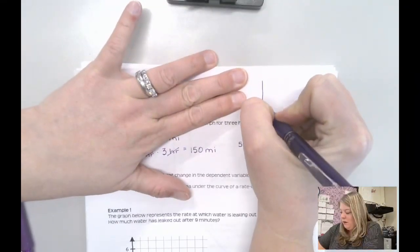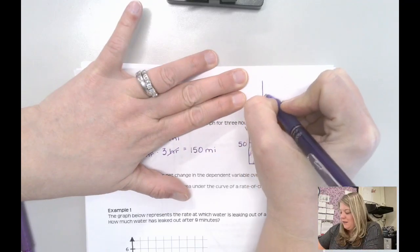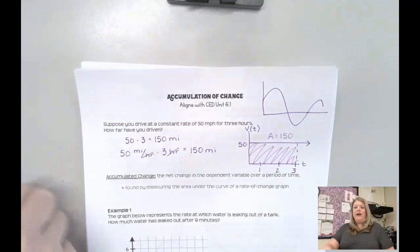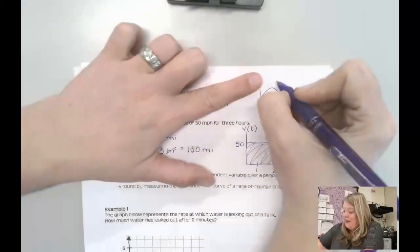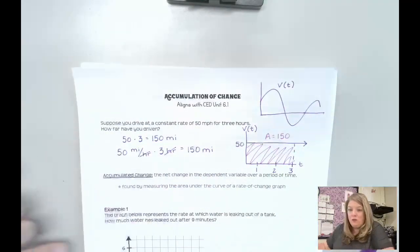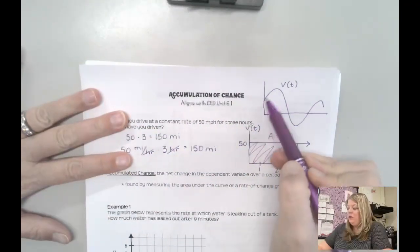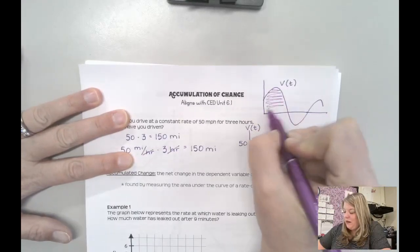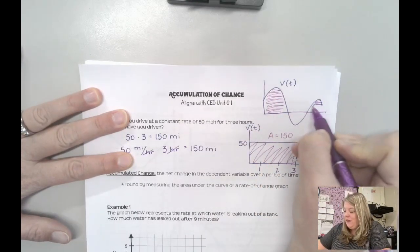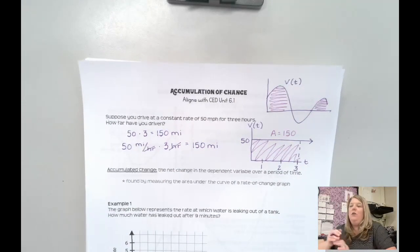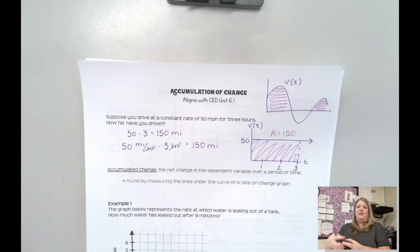What if our velocity goes crazy like this — what if it goes all over the place? This is my velocity graph, and I'm making a big deal about this being a velocity graph because it's a rate of change. If I'm looking at a rate of change and I'm able to find this area, this area is going to tell me how much distance I have covered. It's how much accumulation has there been from that rate of change over time.